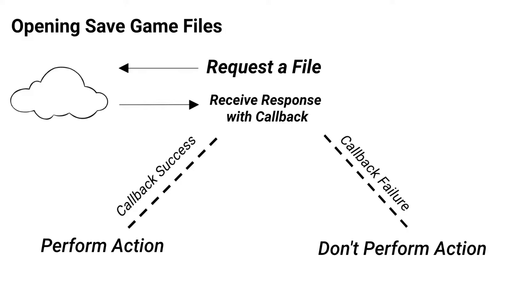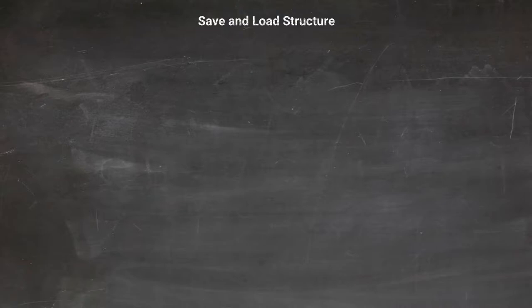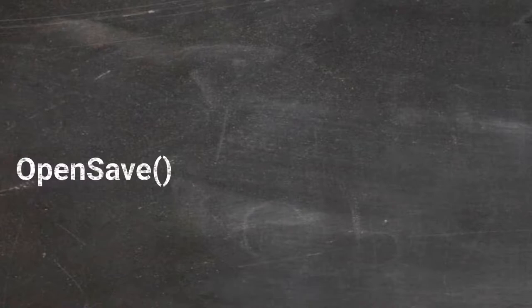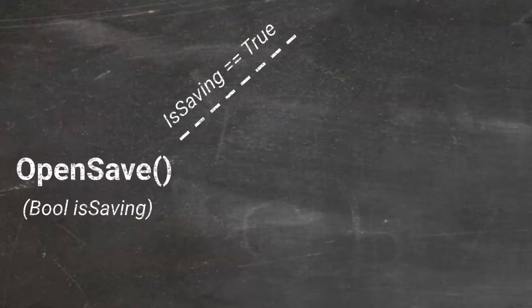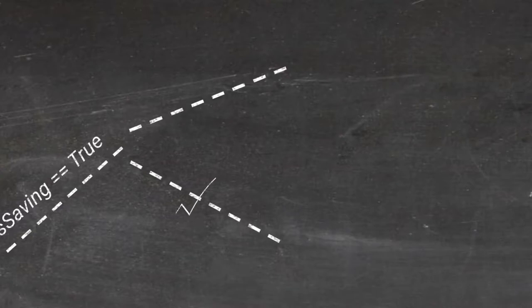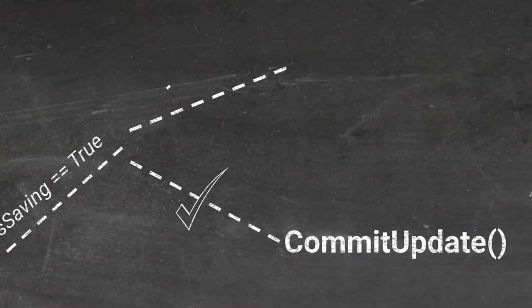Let's have a look at the structure of Saved Games. We're going to be writing a few methods, so let's understand how they all tie together. The first method we'll write is the OpenSave method. This will be the starting point regardless of whether you're saving or loading your data, and we'll give it a bool parameter called IsSaving to check which we're doing. Let's take a look at the saving route first.